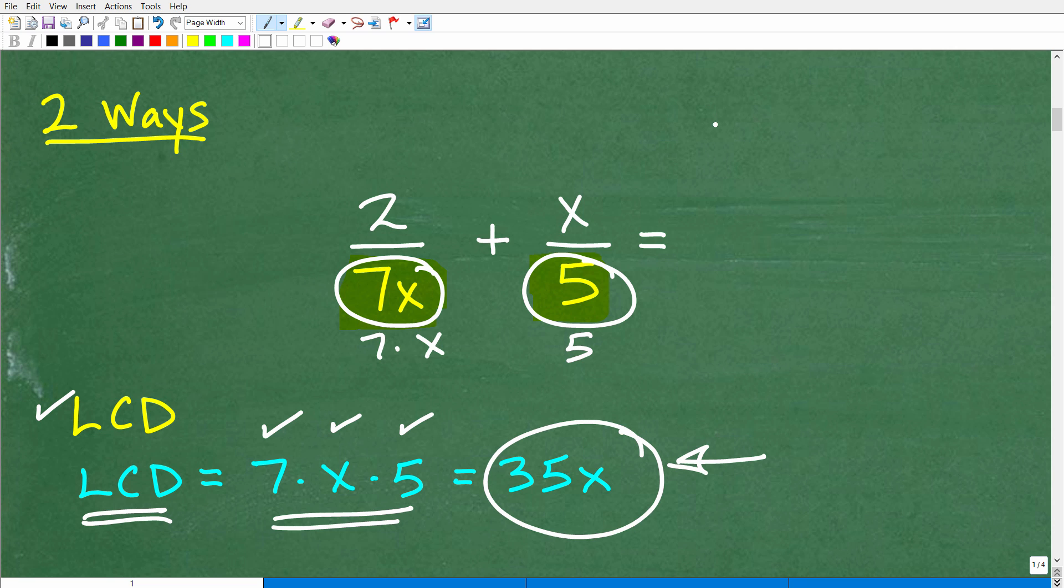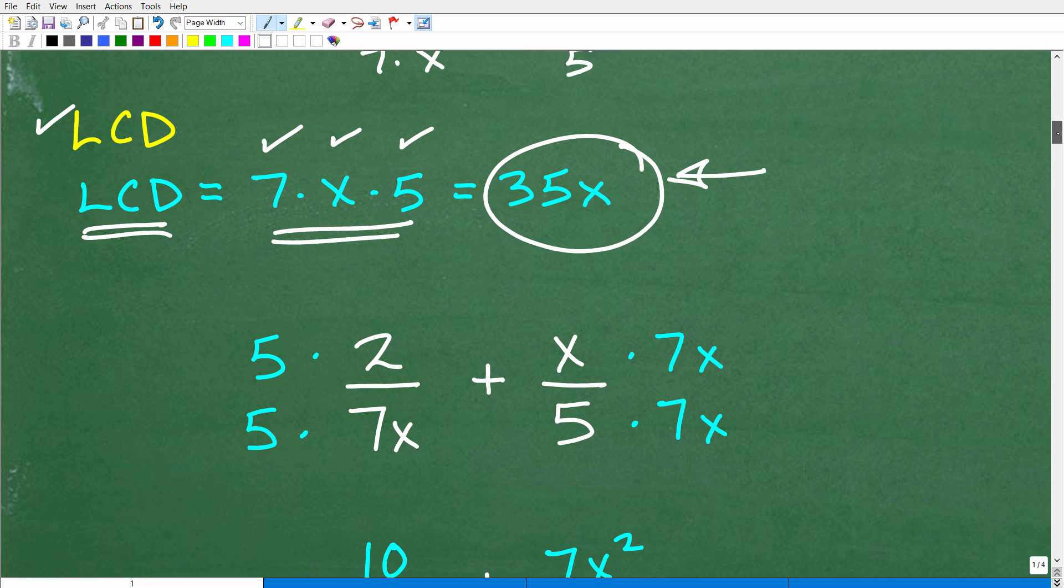And this would be no different if you were trying to figure out this problem, 2 7ths plus 1 5th. If I said, hey, what's the LCD, hopefully you would say 35. In this case, we have an x, so it's going to be 35x.